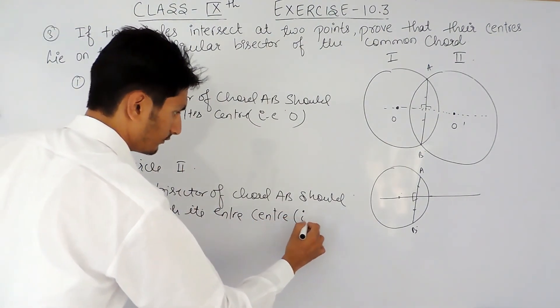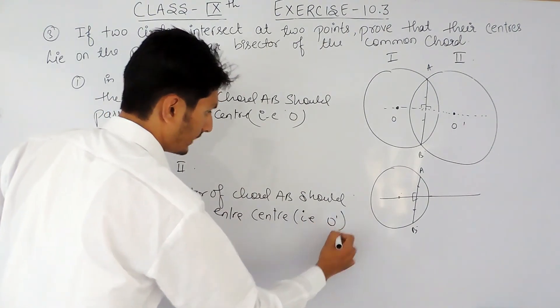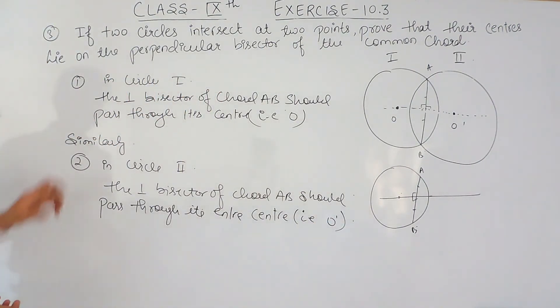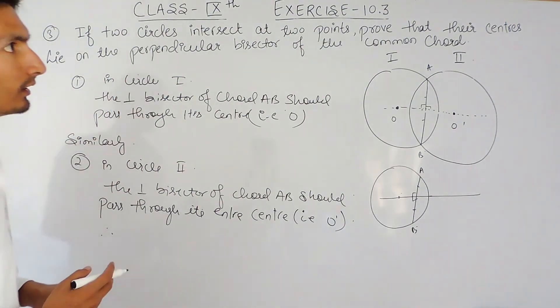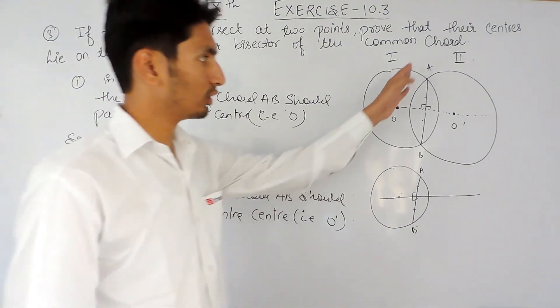And here, for this center, it is O'. So clearly from this, we can say that the centers lie on the perpendicular bisector of this common chord.